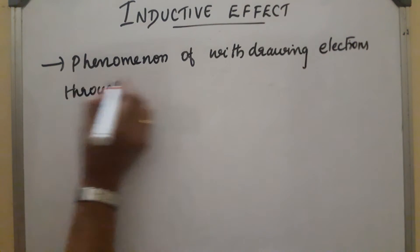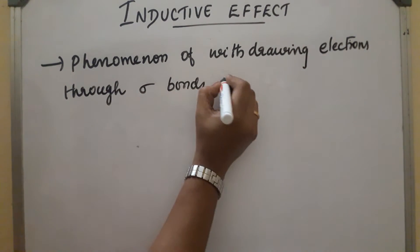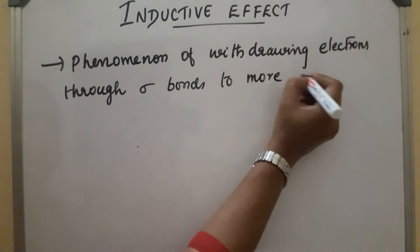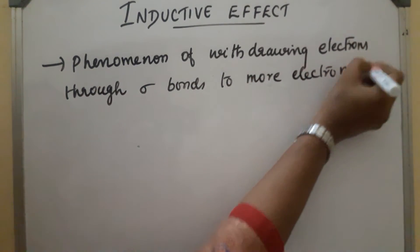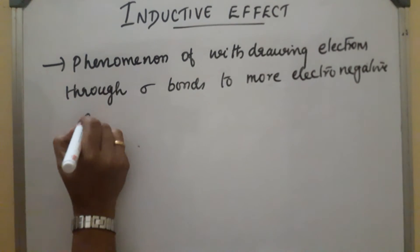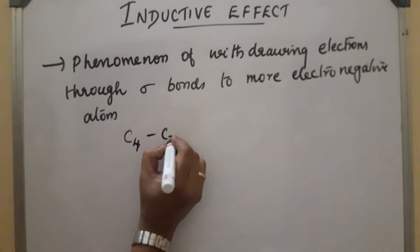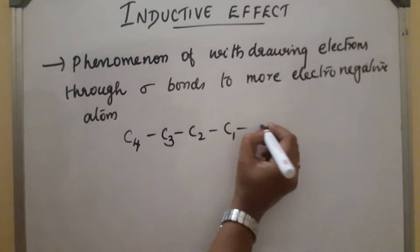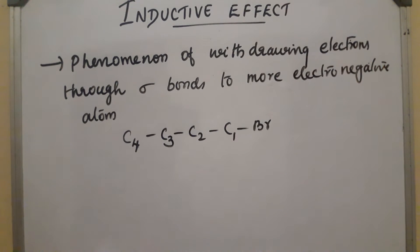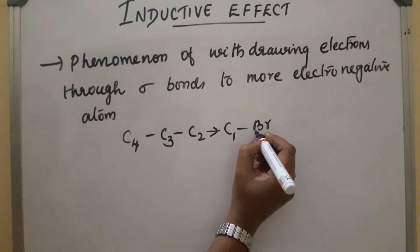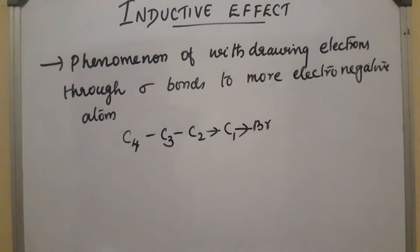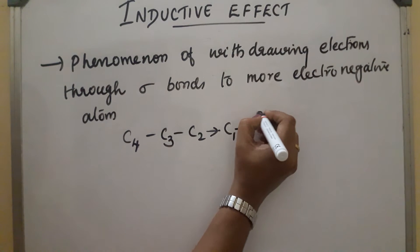Electrons are withdrawn through sigma bonds to a more electronegative atom. Consider an example: if a compound contains four carbon atoms — C1, C2, C3, C4 — to which a more electronegative bromine atom is attached, bromine is highly electronegative and there is a withdrawing of electrons through the sigma bonds toward it.